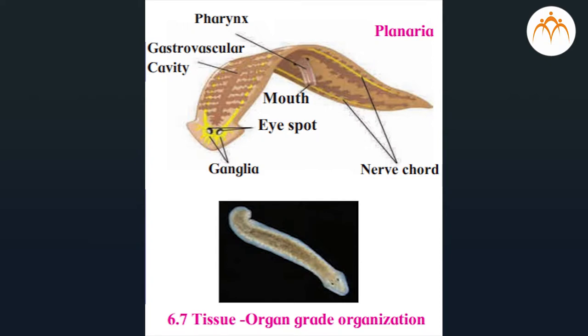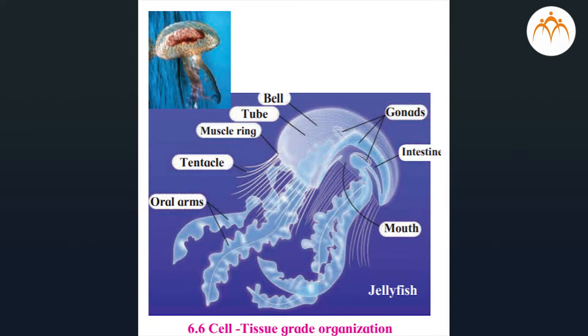In cell-tissue grade animals, cells come together to form tissues which perform the body functions. Example: Cnidaria. In tissue-organ grade organization, tissues are organized to form some organs; however, complete organ systems are not formed.